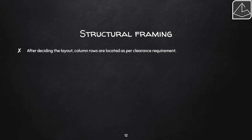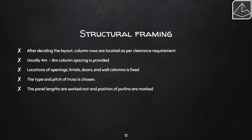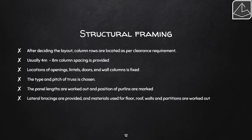For structural framing, after deciding the layout, column rows are located based on clearance requirements — typically four to eight meter column spacing. Then locations of openings, lintels, doors, and wall columns are fixed, and the type and pitch of the truss is chosen. Panel lengths are worked out and purlin positions are marked. Finally, lateral bracings are provided and materials for floor, roof, walls, and partitions are finalized.